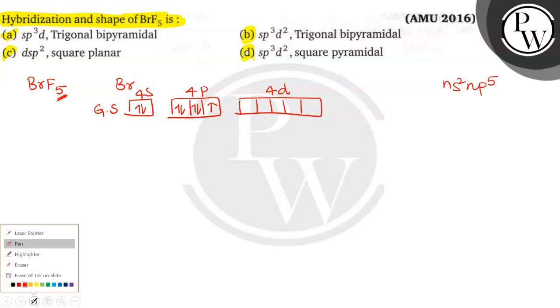What will happen? It requires five unpaired electrons for bonding. So this electron is jumped from here to here and this electron is jumped from here to here. Then what will happen?